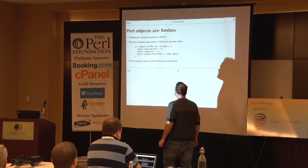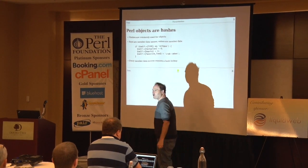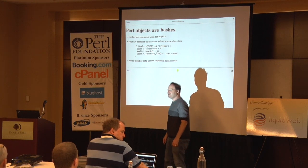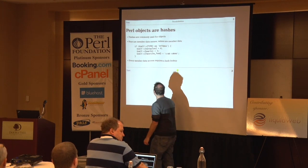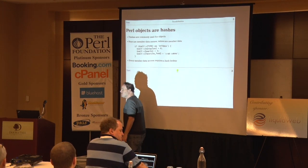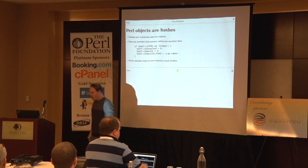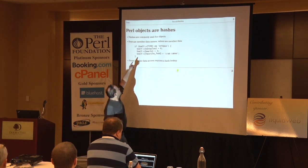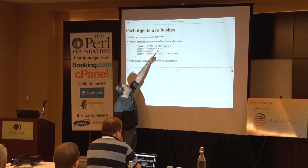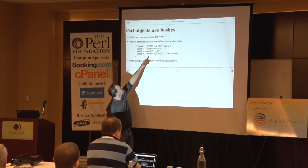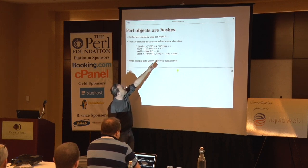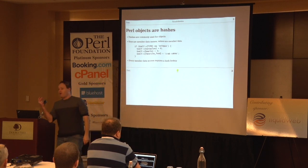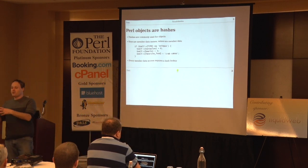The keys in the hash are names of slots for member data, and the values corresponding to those keys are the member data themselves. So here we've got some object that represents some sort of creature. We check to see if the object's type is octopus, and if so, we set it has eight tentacles, three hearts, and its favorite food is crab cakes.